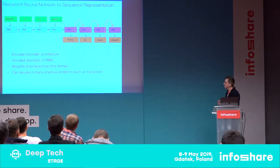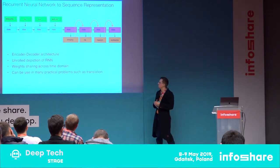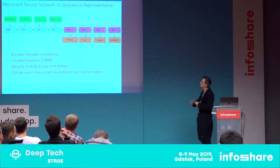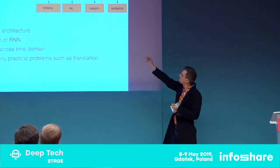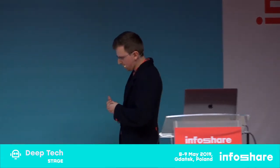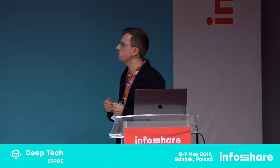Such architectures can be used for different language problems, like machine translation, where one recurrent neural network encodes a sentence from one language and another recurrent neural network decodes a sentence in another language. Having time invariance and the potentially infinite sequence property in mind, we can describe a recurrent neural network using what I call the gold representation.